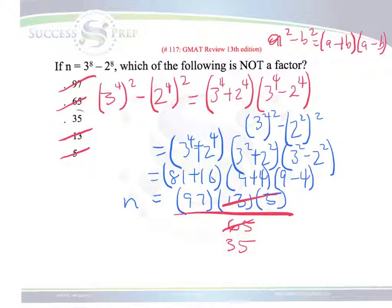So as a result, the answer we want is 35. It's the only number which is not a factor of n, where n is 97, 13 and 5.